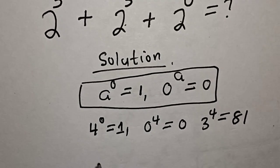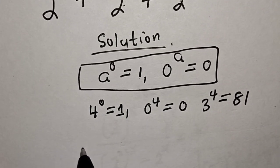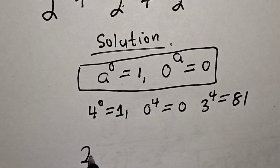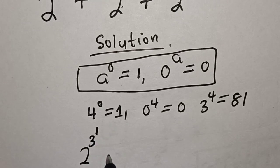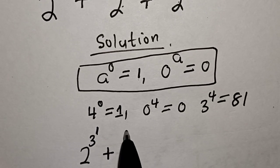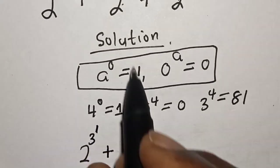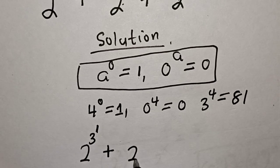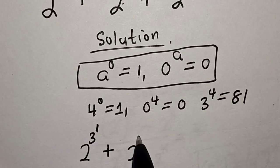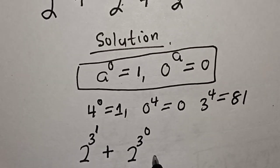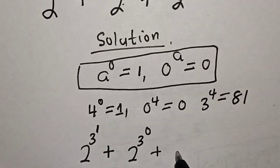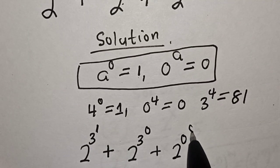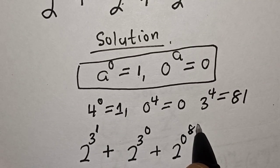Now let's substitute. We have 2 raised to power 3 raised to power 1, plus 2 raised to power 3 raised to power 0, plus 2 raised to power 0 raised to power 81.